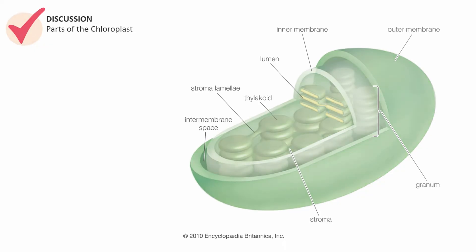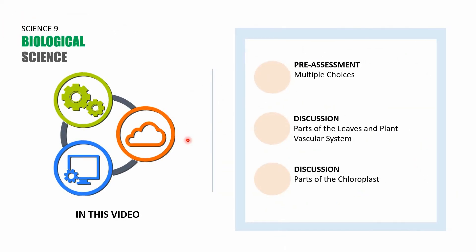In the next video, the discussion will be about the light and dark reactions of photosynthesis. For the meantime, we were able to finish a 10-item multiple choice pre-assessment, a lecture about the parts of the leaves and the plant vascular system, and a discussion about the parts of the chloroplast.